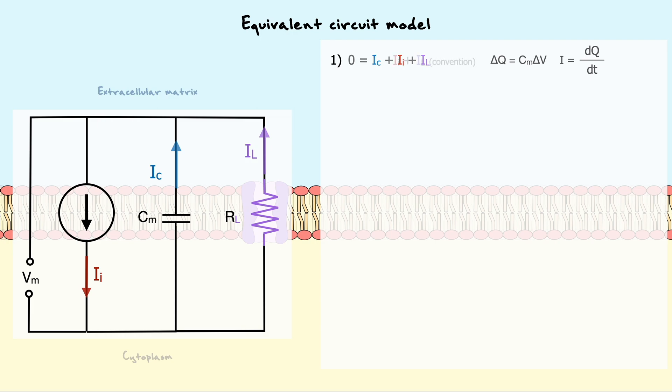Thus, with our convention, we can formulate that the injected current is equal to the capacitive current plus the current coming from the resistor. As we previously did, we can substitute the currents with more thorough definitions.